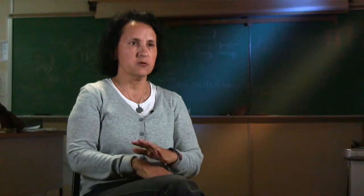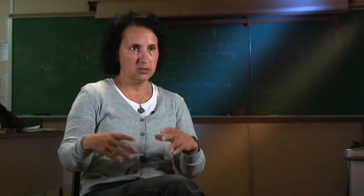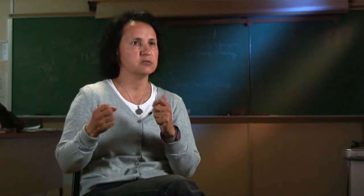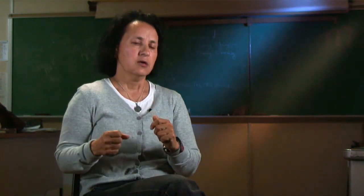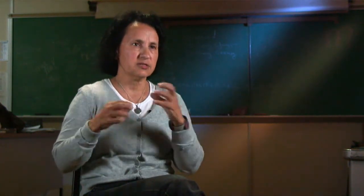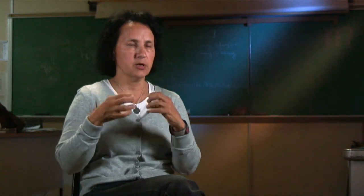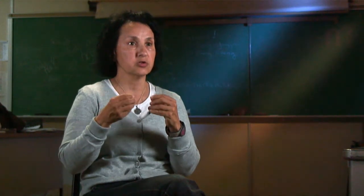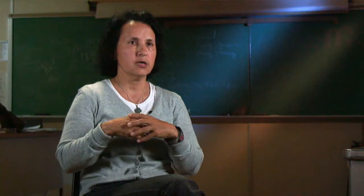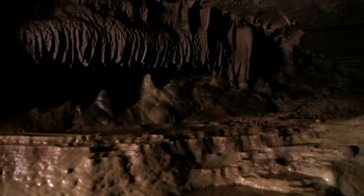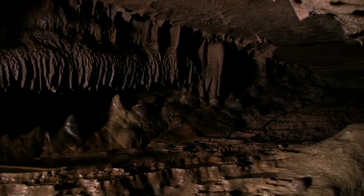Stalactites form when surface water gets into the body of limestone and starts to flow through it and dissolve it. What happens is it starts to take all this calcium carbonate — it takes the limestone into solution. And it gets to a point where it can't dissolve anymore, so now it's got more calcite than it had when it started. When it comes out in a cave and hits the air, there's a little chemical reaction and it deposits a little bit of calcite.